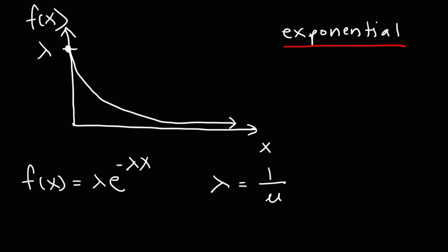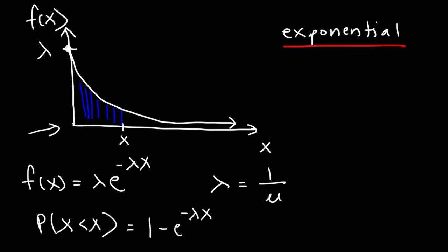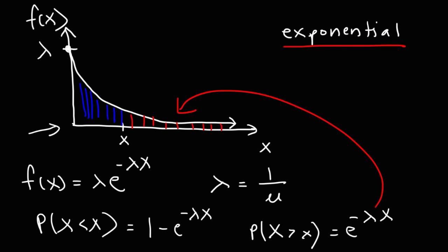For a point x on the exponential distribution, the probability that X is less than x — the area shaded in blue to the left — is given by 1 minus e to the negative lambda times x. If we want the probability that X is greater than x, it is simply e to the negative lambda times x, representing the area under the curve to the right. Those are the key formulas for calculating probabilities and areas under the exponential distribution curve.